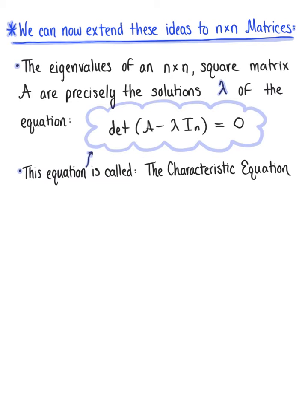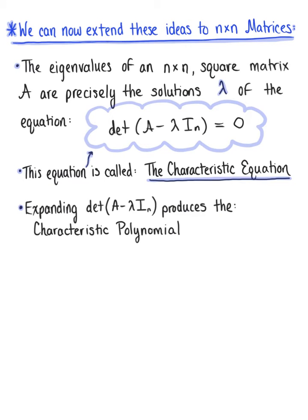This equation is called the characteristic equation. When we expand the determinant of A minus lambda times the n by n identity matrix, this produces the characteristic polynomial.